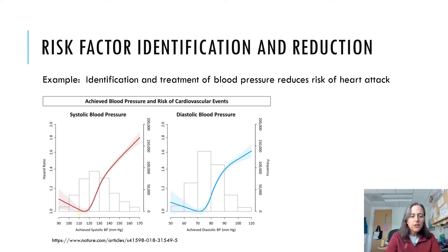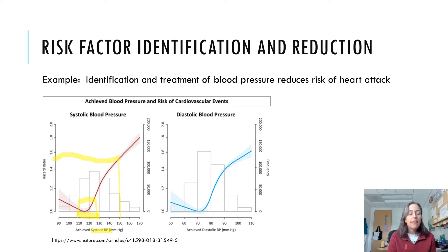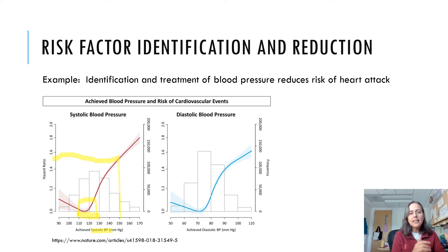A normal systolic blood pressure — the upper number — is usually around 120. In that region of blood pressure, your risk of having a cardiovascular event is quite low. But if your systolic blood pressure is up at 150, you're about one and a half times as likely to have a heart attack or stroke — that's a 50% increase in risk. So they first identified that elevated blood pressure was a risk factor for cardiovascular disease, atherosclerosis, heart attack, and stroke.